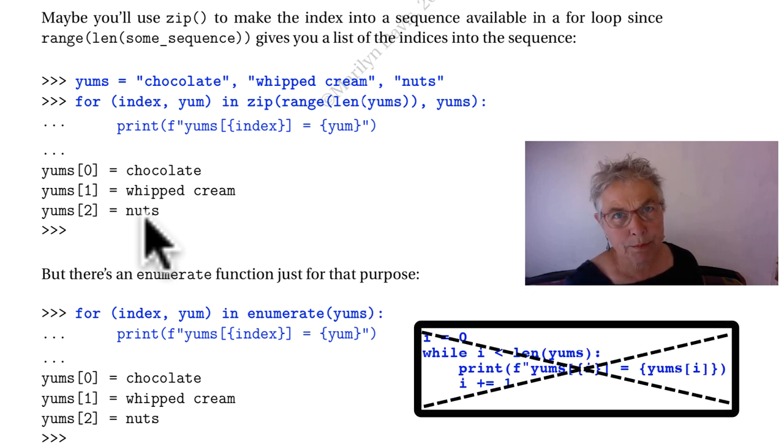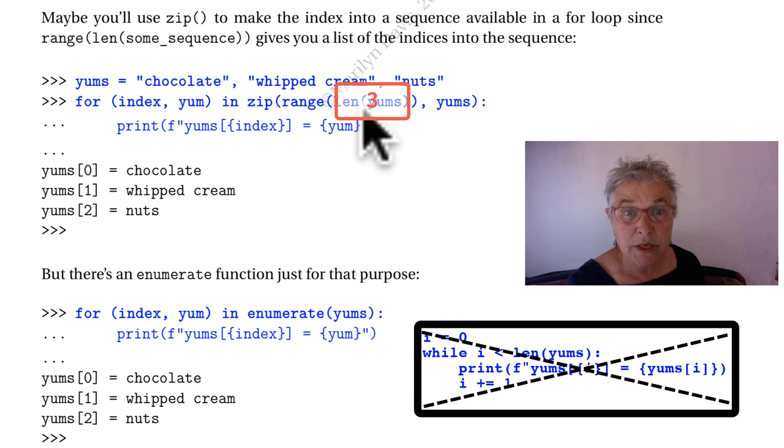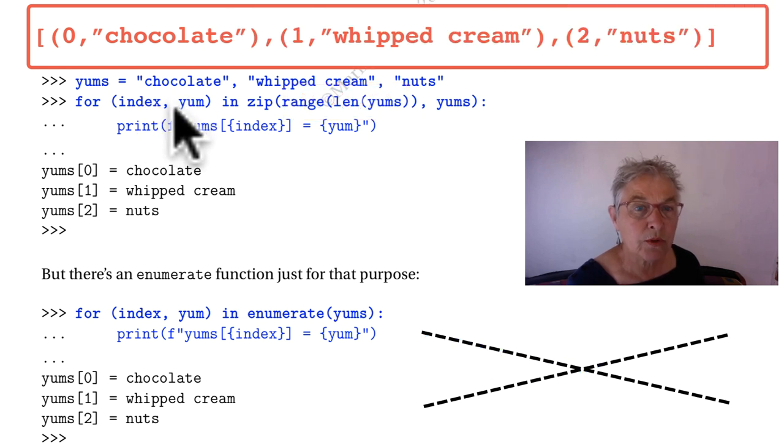Well you don't want to do that in Python. Enumerate is for that purpose. Enumerate is much faster and you can't make a mistake. We'll see that. First we'll look at this. Here we're going to do the zip. First the len of yums is three. The range of the len of yums is zero, one, two. We zip them together and we get zero associated with chocolate, one with whipped cream. So we can print them out.